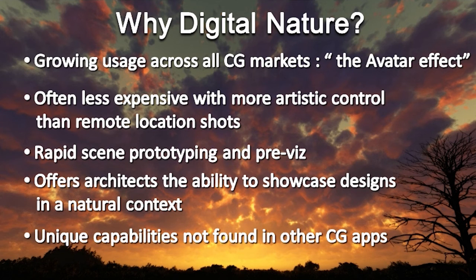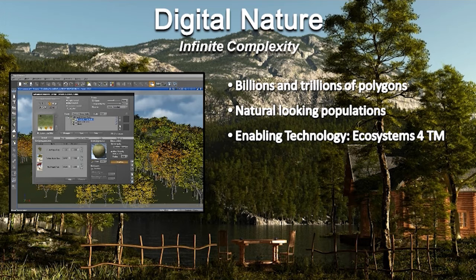Let's talk about what we believe some of these unique capabilities are. First of all, the world of real nature is filled with infinite complexity, and the digital equivalent is no different. Traditional CG apps typically deal with polycounts of maybe a few million. However, in the digital nature realm, scenes containing billions and trillions of polygons are the norm — this kind of complexity would bring most CG systems to their knees. With VIEW, it's handled with ease using breakthrough technologies such as our Ecosystem 4.